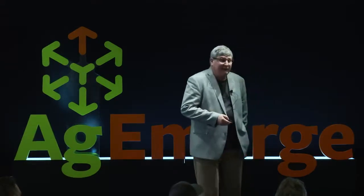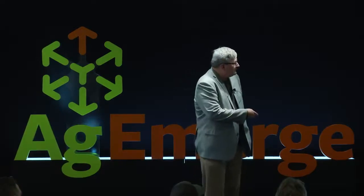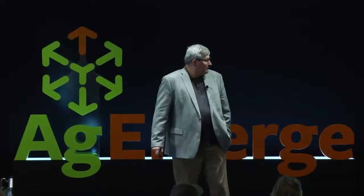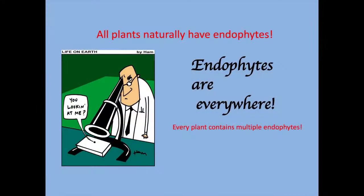Endophytes can be fungi or bacteria. This is a root hair of a plant, and you can see these recently divided pairs of bacteria actually inside those root hairs in the root cell. They're inside the cell but outside the plasma membrane, inside the cell wall — in what we call the paraplasmic space. Endophytes are everywhere. All plants have endophytes — in fact, they have multiple endophytes, including fungi and multiple species of bacteria. There's a small community inside plants.